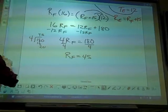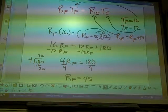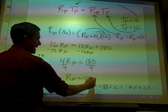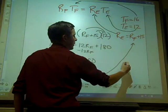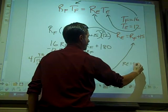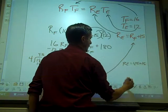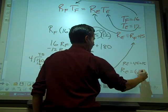Now I found R_F. How do I find R_E? You add 15. You take it back to this equation. R_E equals 45 plus 15, and that's R_E. So R_E equals 60.